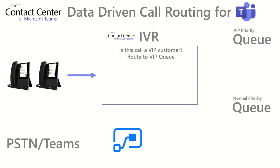In this case, the IVR is configured to determine if this is a VIP customer and then route it to the appropriate queue. But this could be other configurations as well — for example, determining the geography and getting it to the right queue, or determining the department.